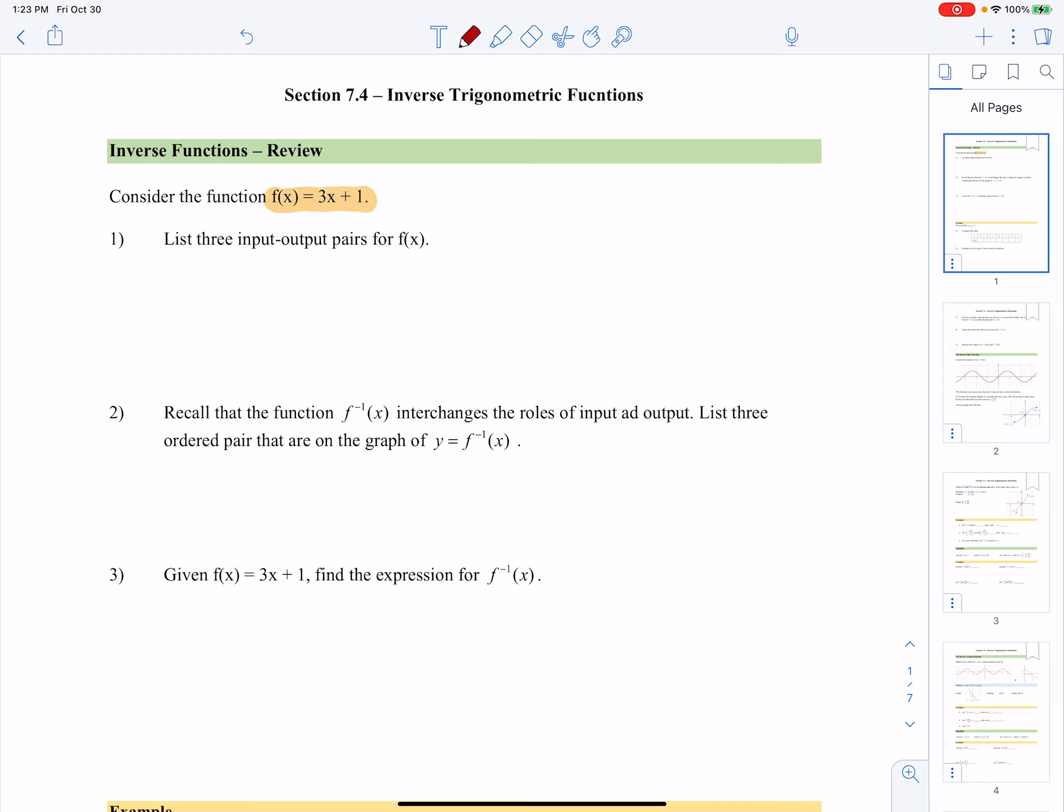First thing we'll do is list three input-output pairs for f of x. So that just means I'm going to plug in any value I want for x and find its corresponding y value. Now, when x is 1, f of x would be 3 times 1, which is 3, plus 1 is 4. When x is 2, we get 7, and when x is 3, we get 10.